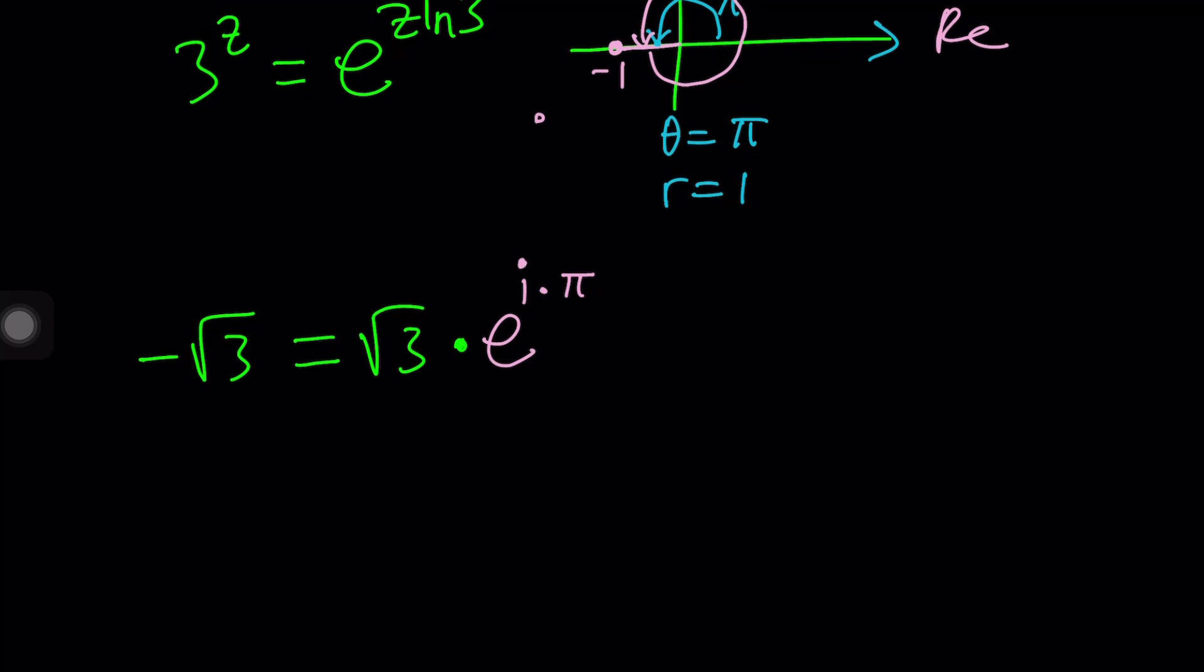Now, instead of writing it as just π, I want to write it as π plus 2π n, where n is an integer. So we're basically covering the whole ground, all integers, because there are infinitely many values. If n is equal to 0, you get what is called the principal value.